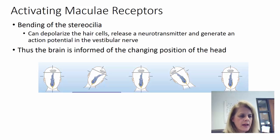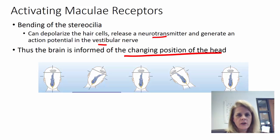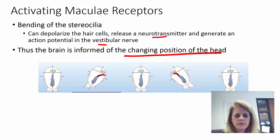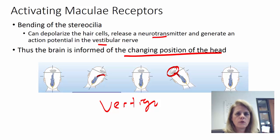To activate these receptors in the macula, you have to bend those stereocilia. That causes depolarization of the hair cells, which releases a neurotransmitter and generates an action potential traveling to the vestibular nerve. Depending on which stereocilia is activated, the brain can determine which position the head is in. Some people who experience vertigo have otoliths that are out of place, bending the hair cells even though the head isn't moving — so the brain doesn't process it correctly, causing a dizzy feeling.